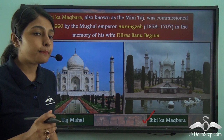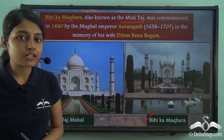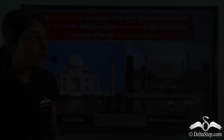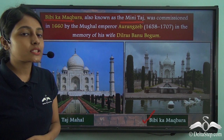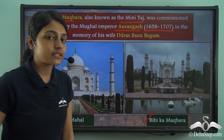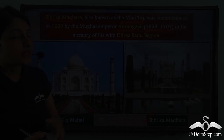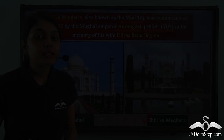Now who built Bibi Ka Maqbara? It is also known as the Mini Taj. It is obvious why it is known as the Mini Taj because the resemblance between these two architectural pieces is way too obvious. This Bibi Ka Maqbara was commissioned by the Mughal Emperor Aurangzeb, who ruled from 1658 to 1707 and was the successor of Shah Jahan.